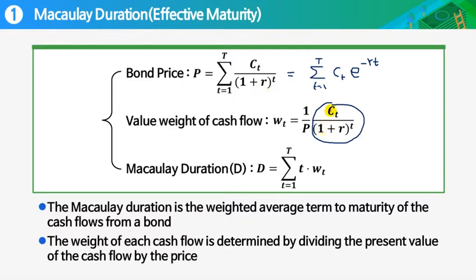So if we calculate the ratio between the present value of this particular cash flow and bond price, we can regard this one as the value weight of that cash flow.